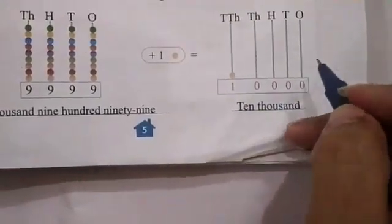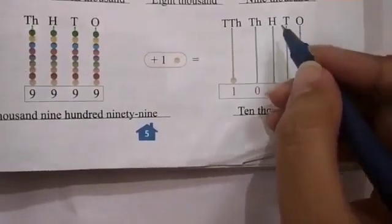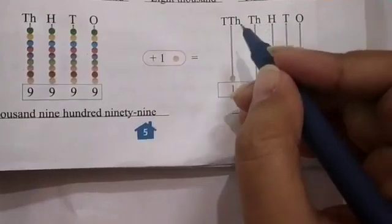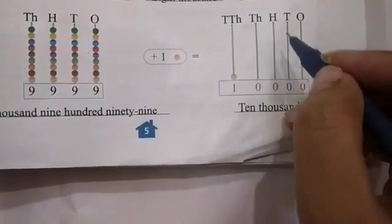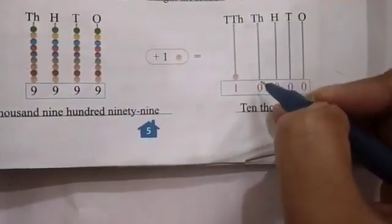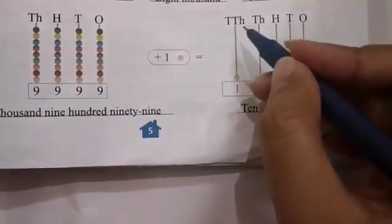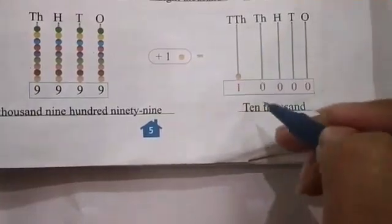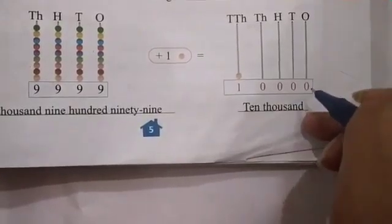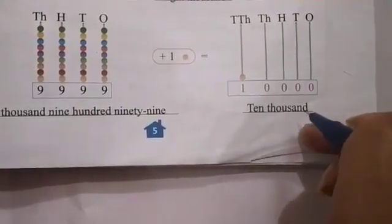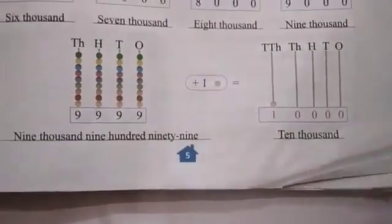So here in this Abacus, there are five place positions: ones, tens, hundreds, thousands, and ten thousands. There are no beads at the ones, tens, hundreds, and thousands places, but one bead is at the ten thousands place. So the number formed is 10,000, and its number name is ten thousand. Understood? Now let us start with classwork.